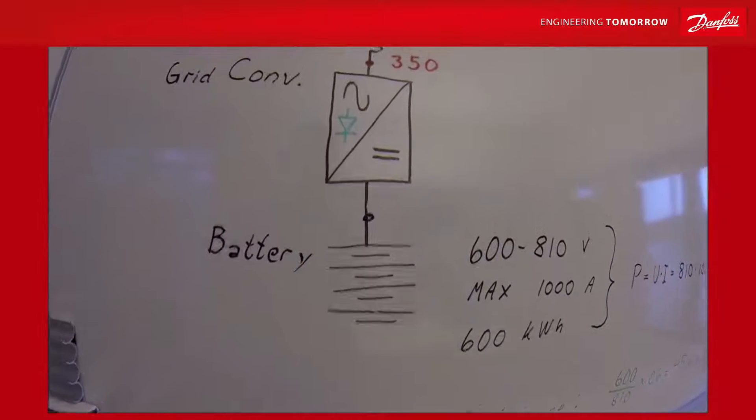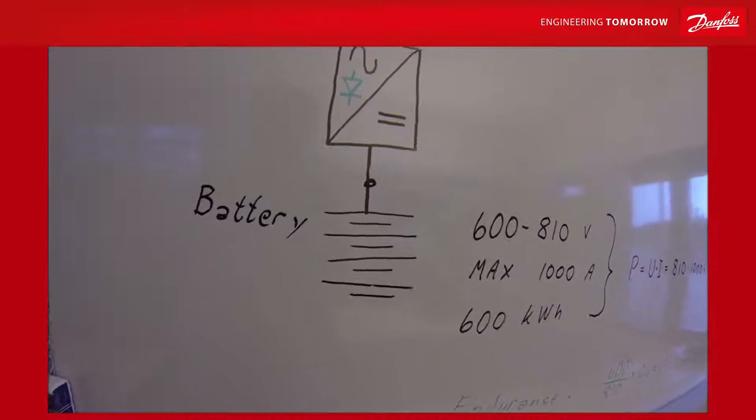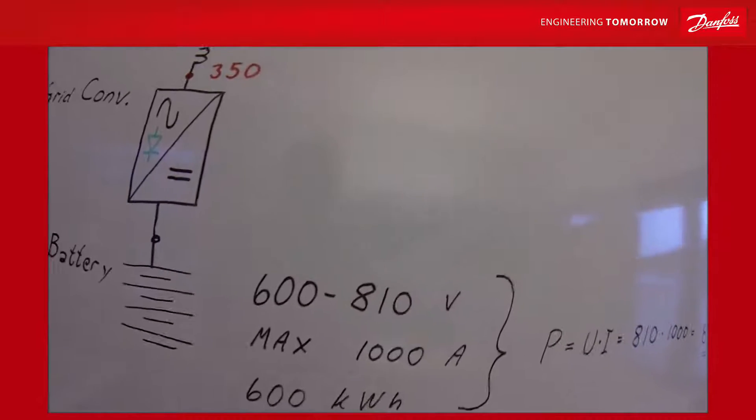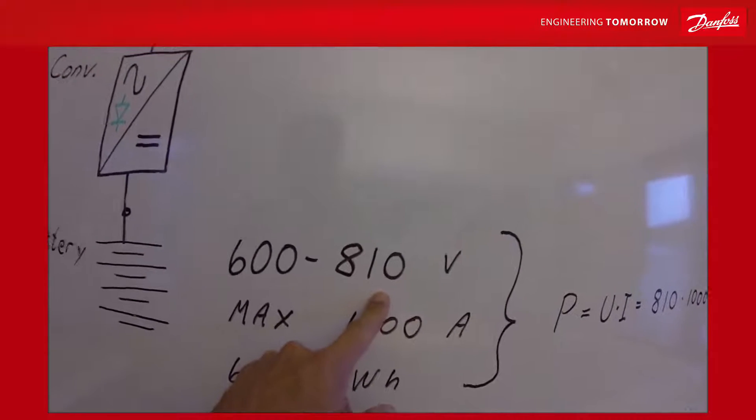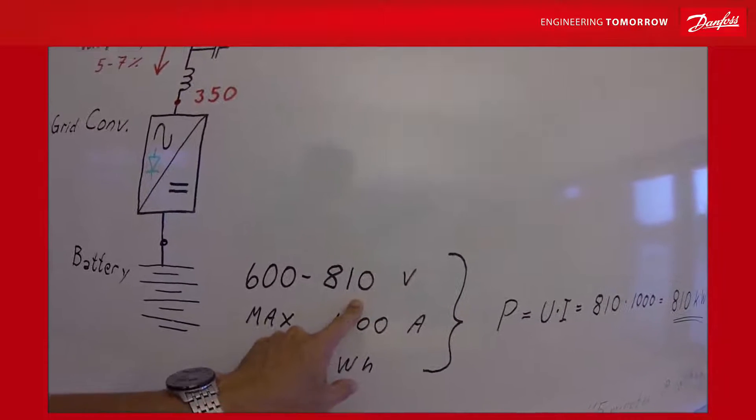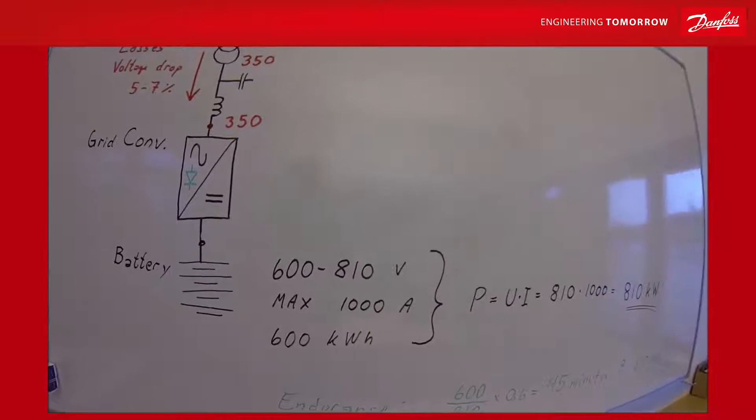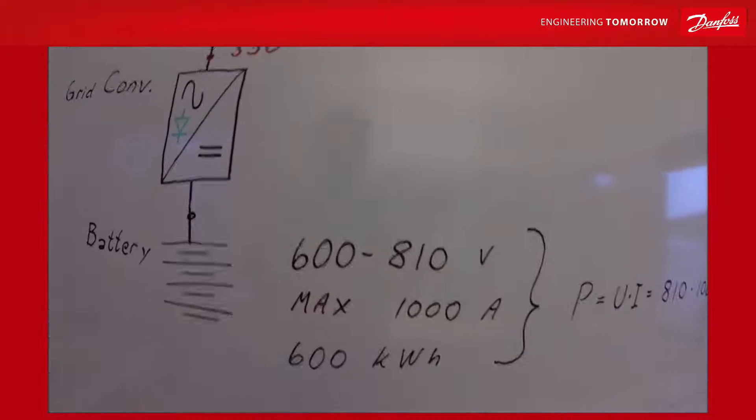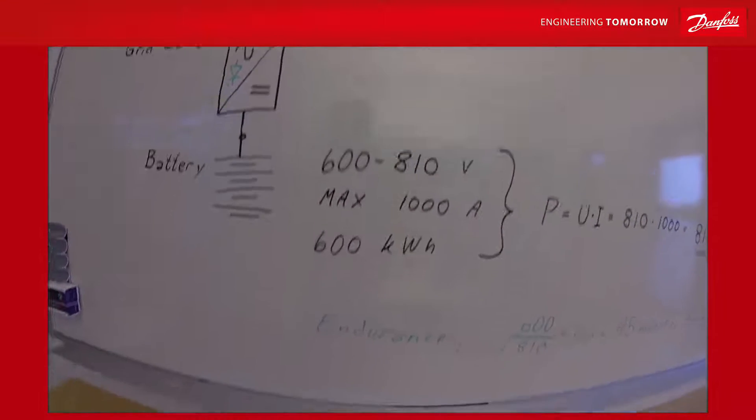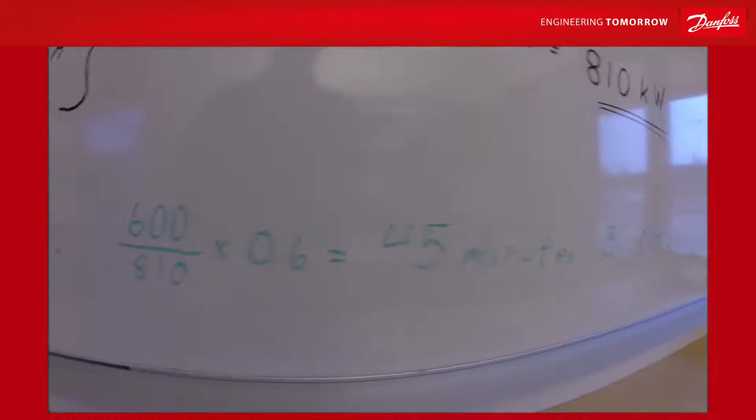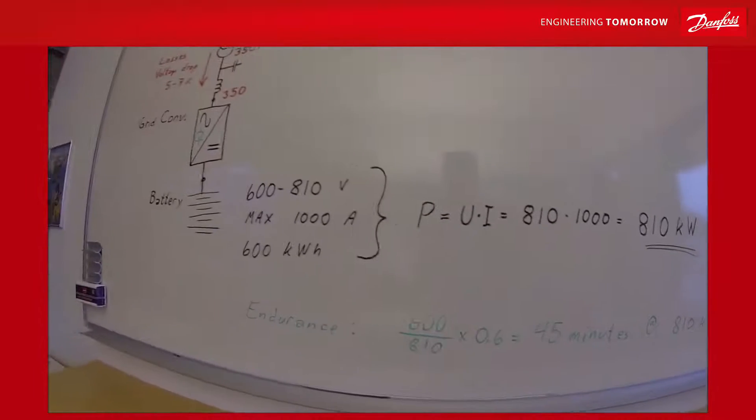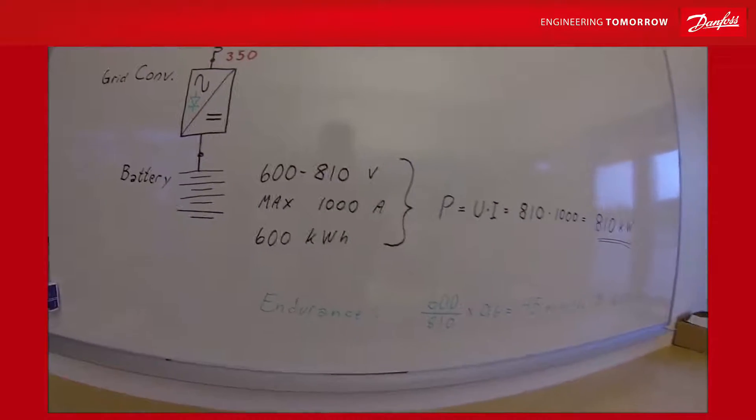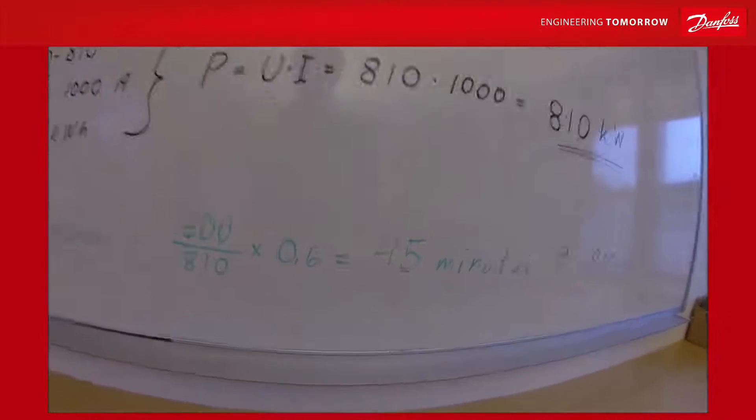How long can you supply these 810 kilowatts? Well, first the voltage of 810 volt will not be 810 volt unless the state of charge is 100%, so the voltage will drop off. But in theory you could have 45 minutes of 810 kilowatts. When the voltage drops off with the state of charge, less so we are talking about something close to a half an hour with this power.